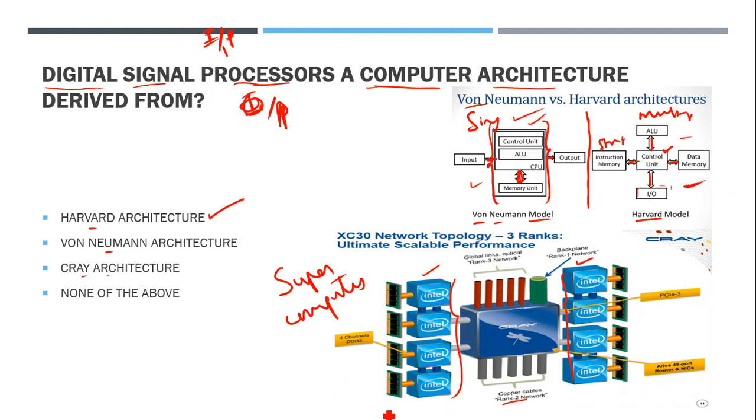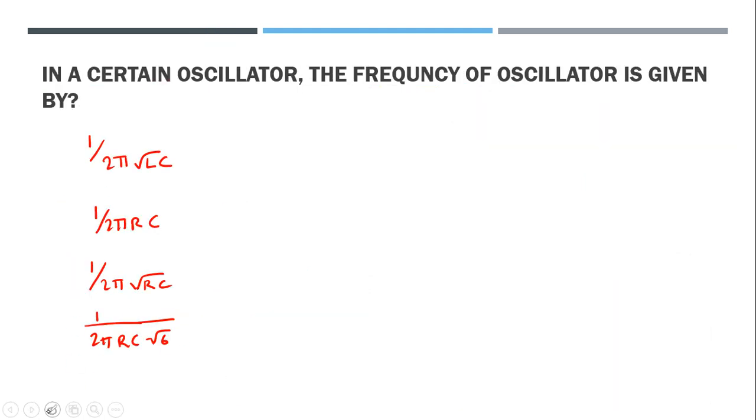There are multiple racks, and each rack has either Von Neumann architecture or Harvard architecture. Each rack has its own setup. Multiple racks together form a supercomputer system. So the right answer is Harvard architecture.